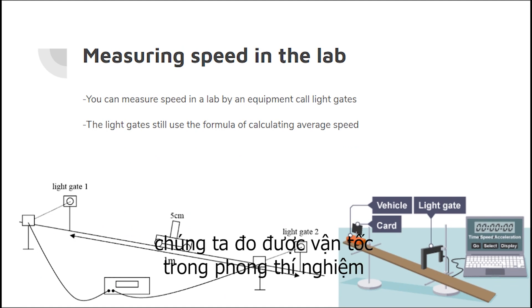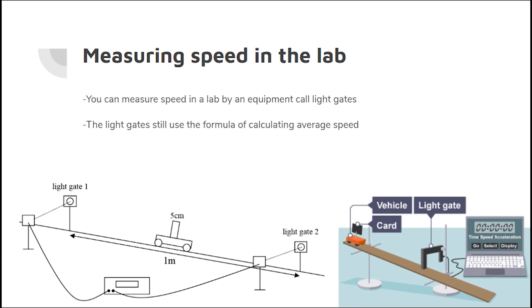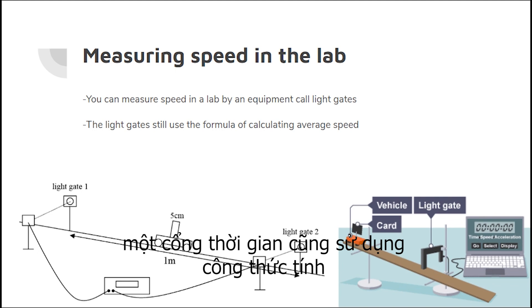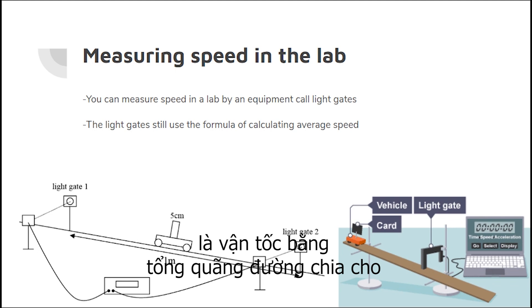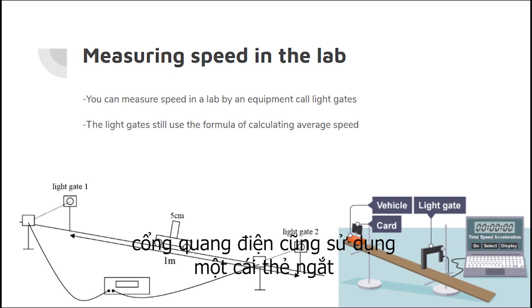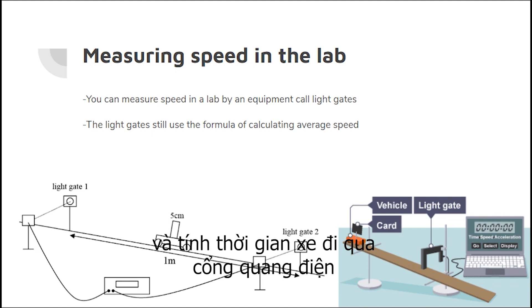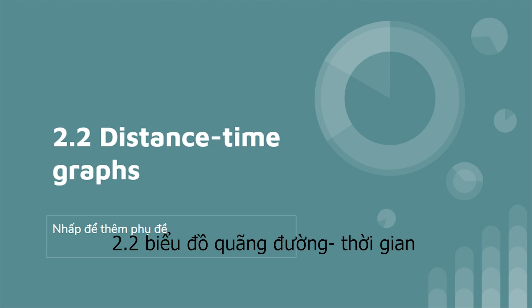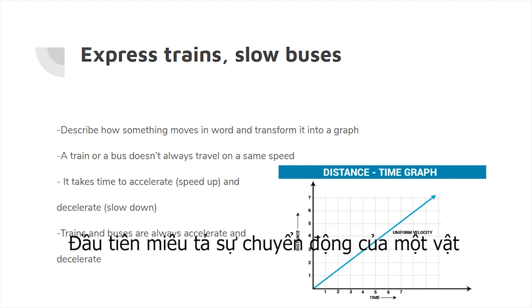We will also learn how measuring speed is calculated in the lab. You can measure speed using equipment called light gates. The formula for calculating average speed is speed equals distance over time. Light gates use an interrupt card to detect when the vehicle passes through and calculate the time when it passed the light gate.